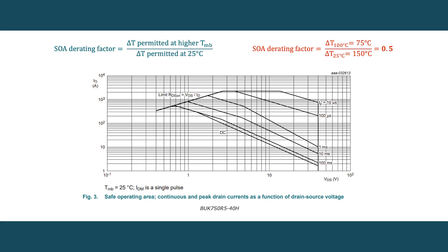Multiplying the derating factor with the existing current values on the chart will give us our estimated drain currents in the hotter environment.